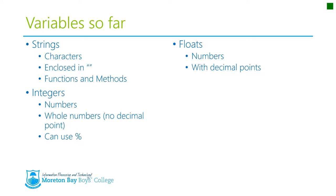Integers are numbers — they're whole numbers, they don't have a decimal point, and you can use the modular symbol to get the remainder when you're doing a division. Floats are numbers and they do have decimal points. An easy way to remember that is a decimal is actually a floating point decimal. So that's the three types we've looked at so far.